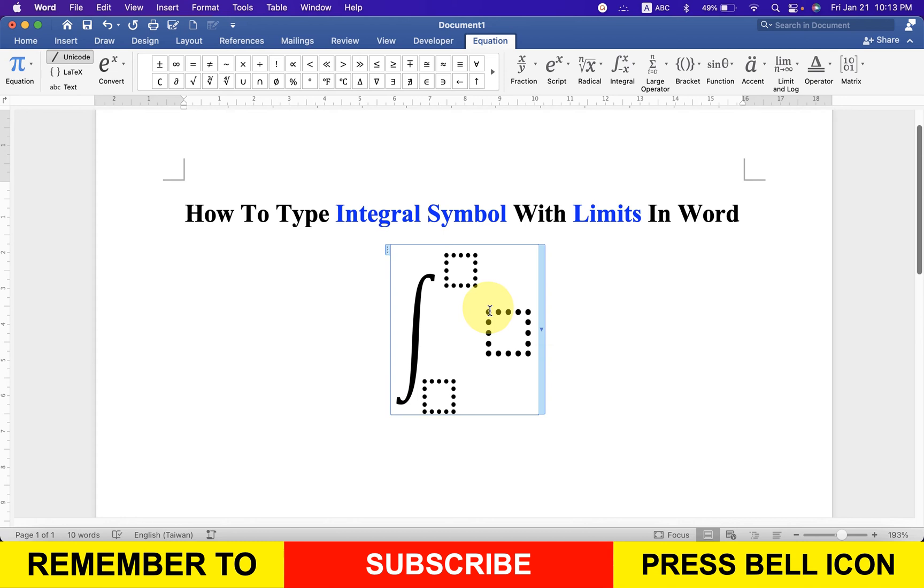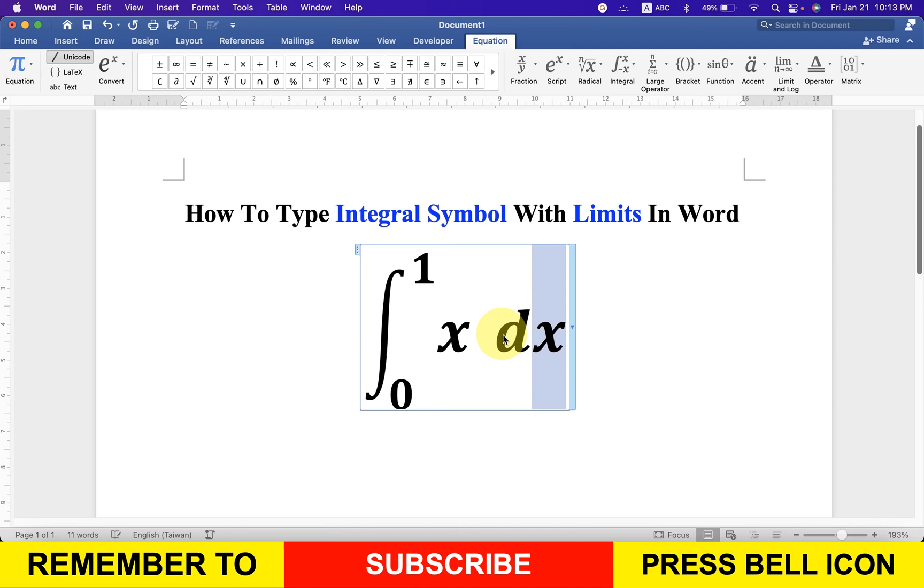What you have to do is click inside the box, type the numbers, and in the next box type what you want. Then press forward arrow key, spacebar, and type what you want. Now notice that this is in italics.